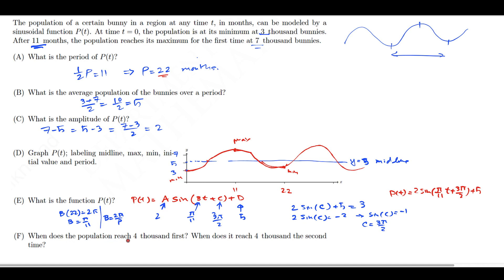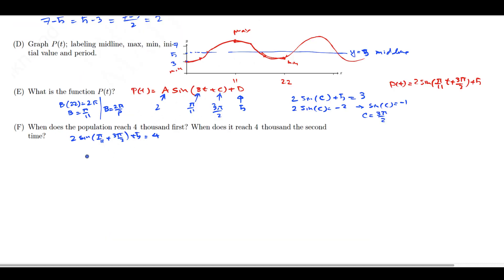When does the population reach 4,000 first, and when does it reach 4,000 the second time? The first time it reaches 4,000 should be somewhere around here, and then the second time should be somewhere around there. To find that, you basically use that function. You set 2 sine of π over 11 T plus 3π/2 plus 5 equal to 4.